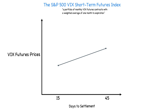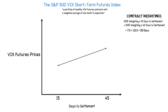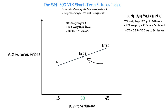Let's say the nearest-term VIX Futures contract has 15 days to settlement, and the following month's VIX Futures contract has 45 days to settlement. In that scenario, the front-month VIX Futures contract would get about a 50% weighting, and the next month's VIX Futures contract would also have a 50% weighting in the index. If we multiply the weightings by the time until settlement and add them together, we get an average weighted time to maturity of 30 days. Now let's say the 15-day VIX Futures contract is trading at 16, and the 45-day VIX Futures contract is trading at 17.5. We can calculate the price of the 30-day VIX Futures at 16.75 by taking each contract's weighting, multiplying it by its current price, and adding those two values together.